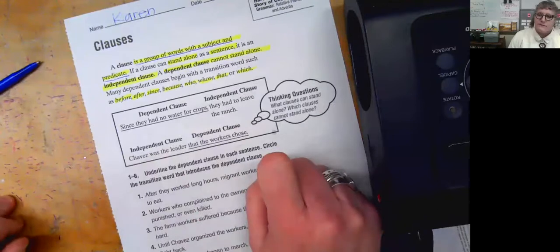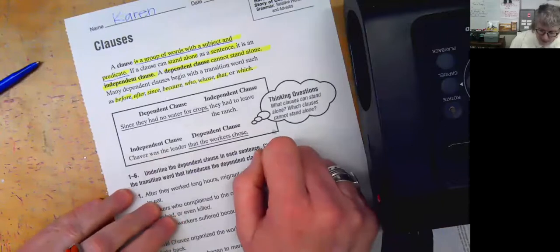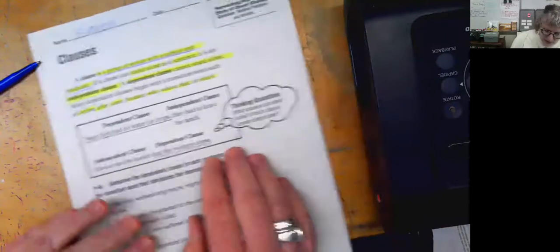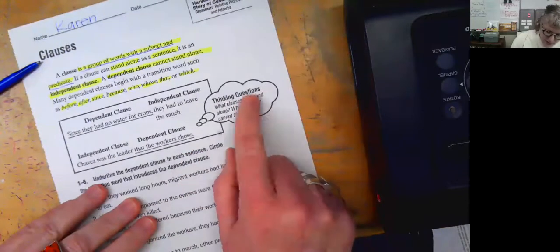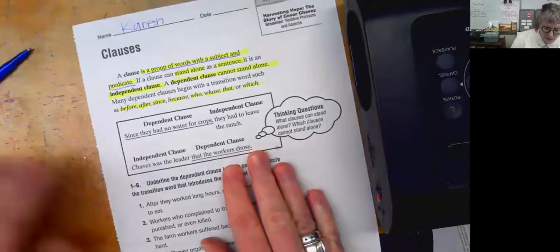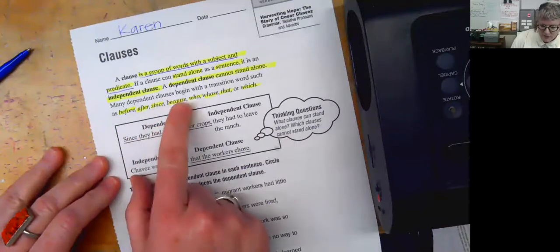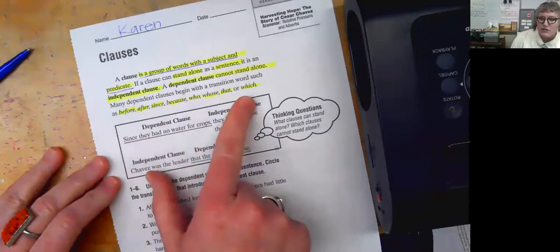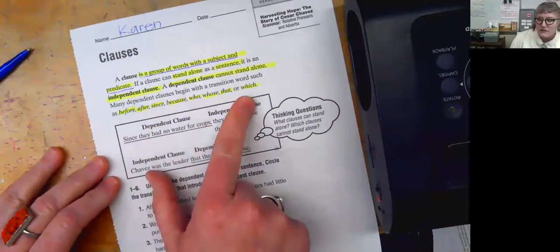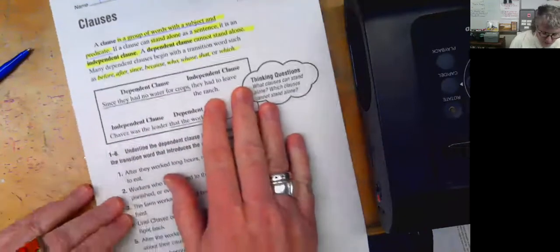'That the workers chose' — the word 'that' makes it dependent. Dependent means it can't be its own sentence; independent means it can stand alone. Here's a thinking question: which clauses can stand alone and which cannot? Clauses that start with before, after, since, because, who, whose, that, or which are going to be dependent.